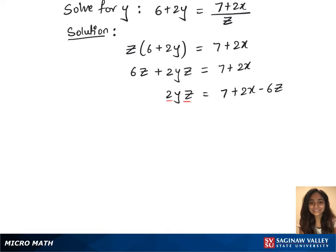We are isolating y by dividing 2z on both sides, which is y equals 7 plus 2x minus 6z over 2z. We have solved for y now and this is our solution.